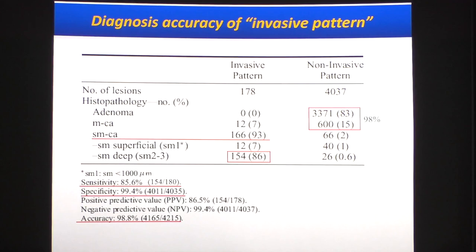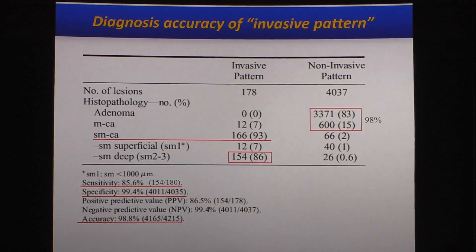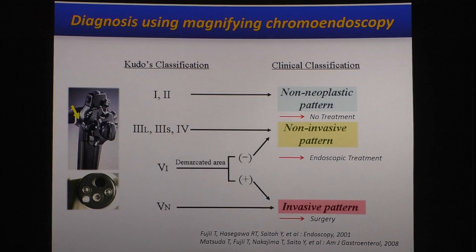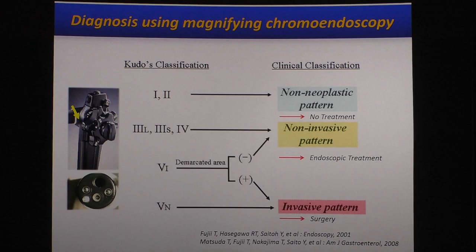Let me show the diagnostic accuracy of invasive patterns. If performed by experts, very accurate diagnosis can be possible. To summarize diagnosis using magnifying chromoendoscopy: type 1 or type 2 pit indicates a non-neoplastic pattern — no treatment required. Type 3L, 3S, or type 4 pit — good indication for endoscopic treatment. Type 5N pit — good indication for surgery. If you see type 5I pit with severe irregular pit pattern, evaluate the demarcation and inside the demarcated area. If the lesion shows positive invasive pattern — good indication for surgery. If negative for invasive pattern — good indication for endoscopic treatment.